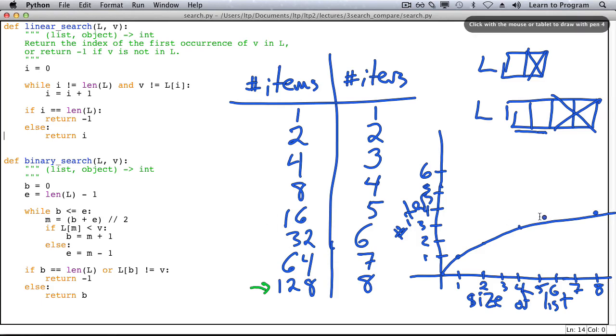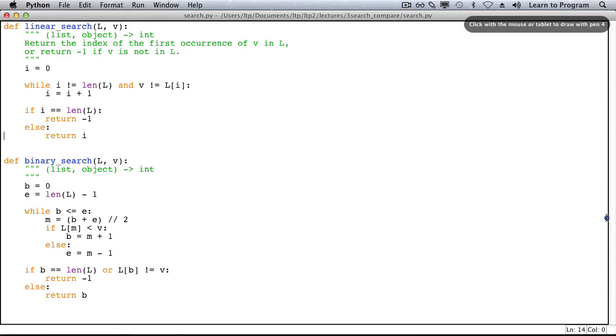Mathematicians have a name for this function. It's called the logarithm base two of the number of items. Here's one more way to think about logarithms. It's the number of times you can divide by two in order to reach one.